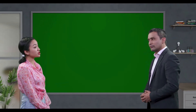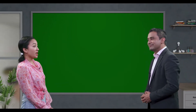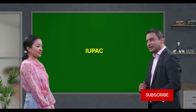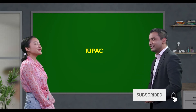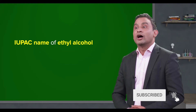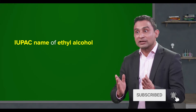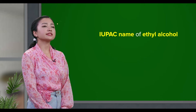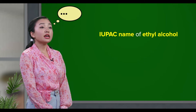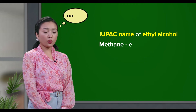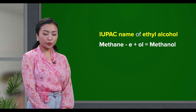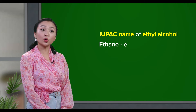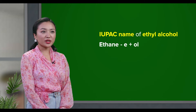Ethyl alcohol — can you try the naming? Methane with the suffix -OL gives methanol. And Ethane with the suffix -OL gives ethanol.